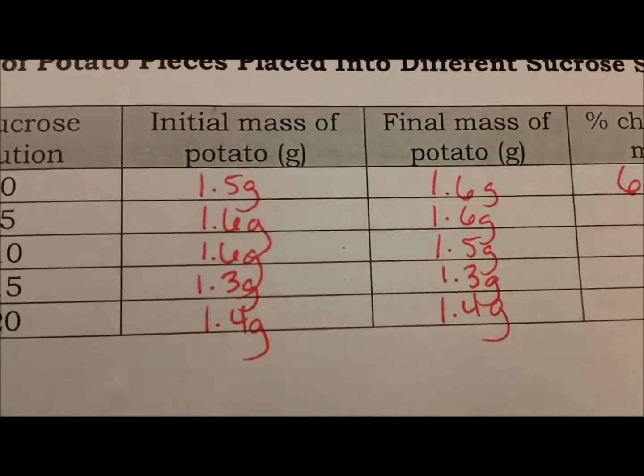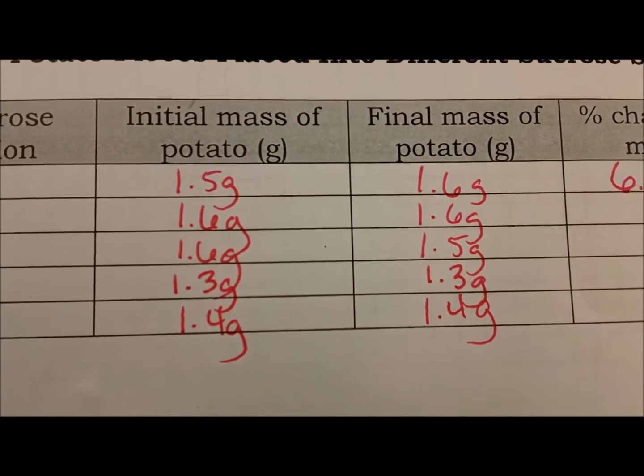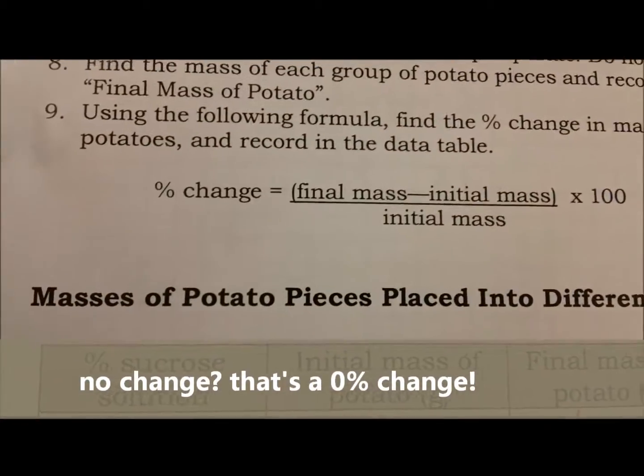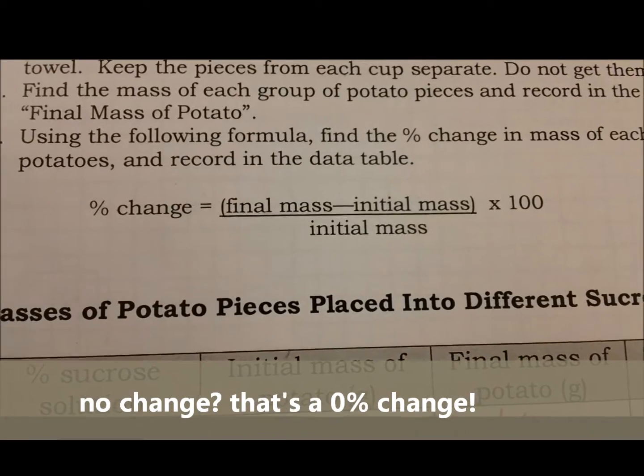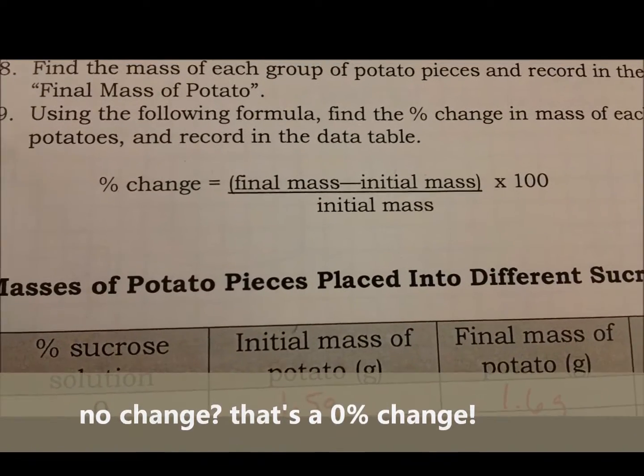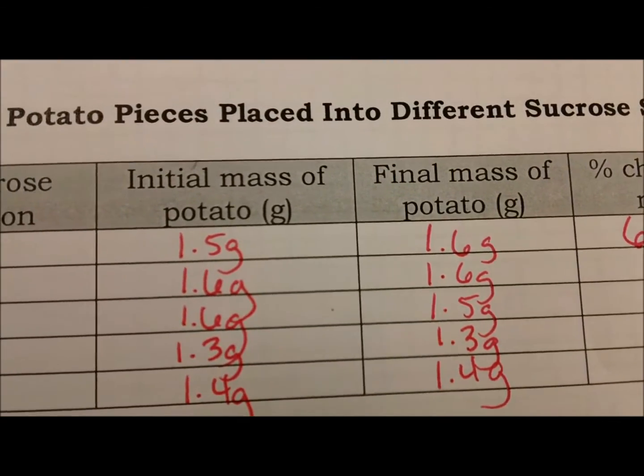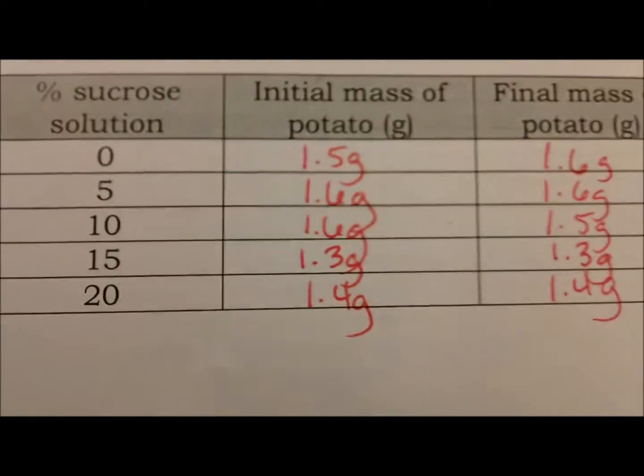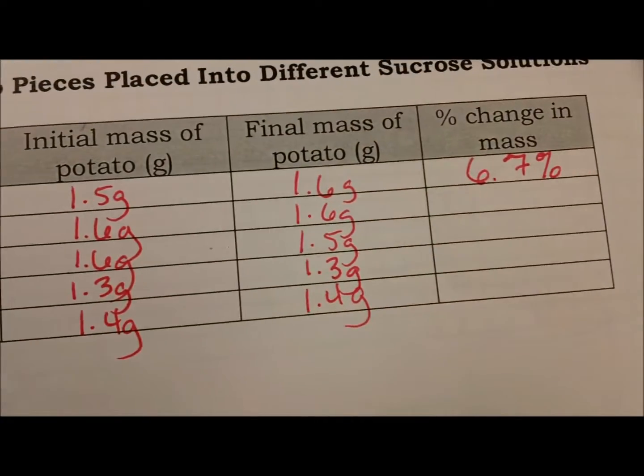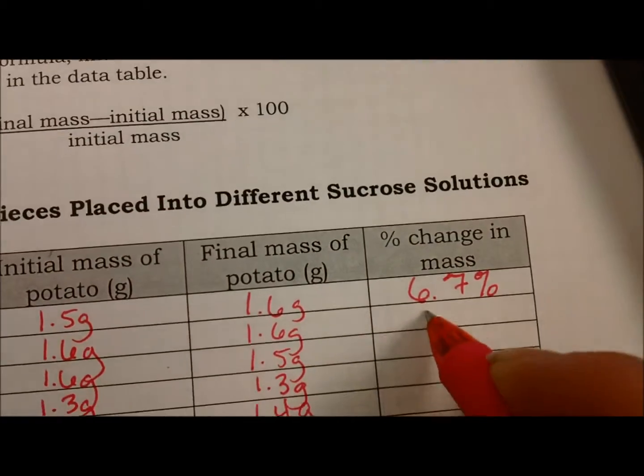When we have no change from beginning to end, then we know that 1.6 minus 1.6 is zero. We really don't have to do a calculation if there is no change. So we see for our 5%, 15%, and 20%, there is no change in the final mass.